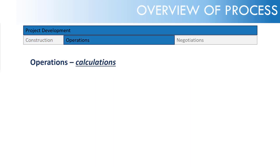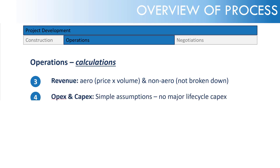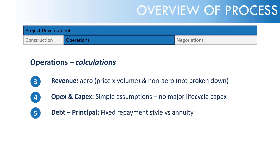Then we're getting into operations calculations. The third calculation will be revenue, looking at the aero price and volume, and non-aero, which will be given to us as an input. Fourthly, opex and capex — we'll use simple assumptions: no major life cycle capex, but we'll have an ongoing capex.